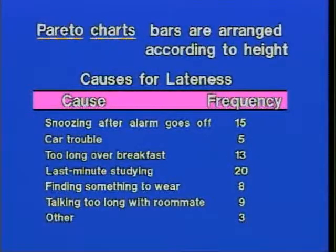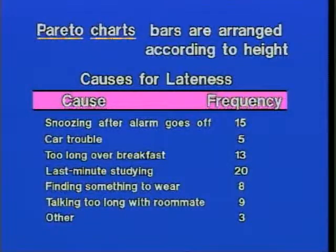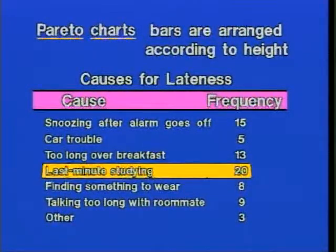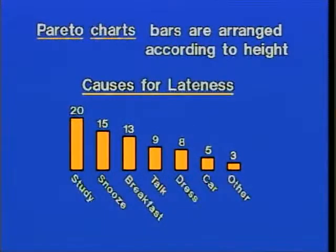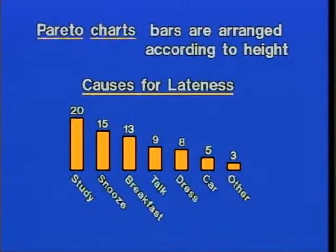The 'other' category with a frequency of three probably means three different causes each occurred only once and were lumped into one category. When making the Pareto chart, we identify the most frequently occurring cause first — last-minute studying — and list it as the first bar. Then the next most frequent: snoozing after the alarm at 15, and so on. The Pareto chart lets us very quickly identify that studying was the greatest cause of lateness, and car trouble the least.